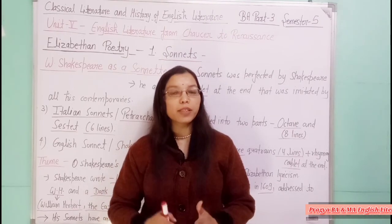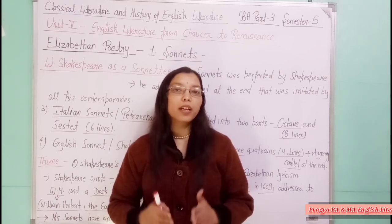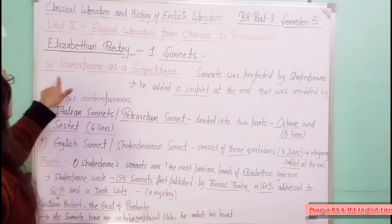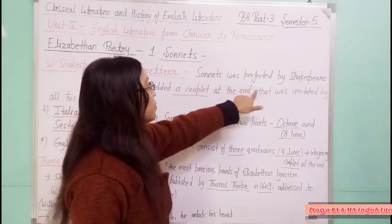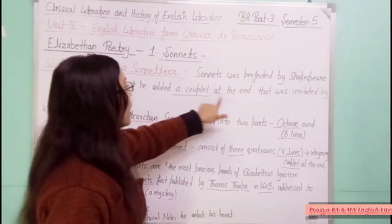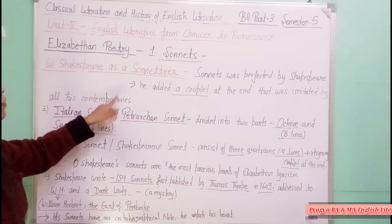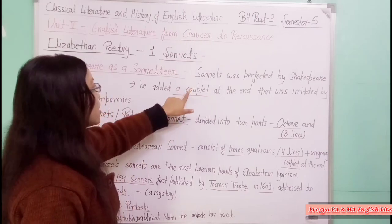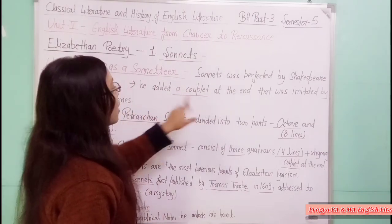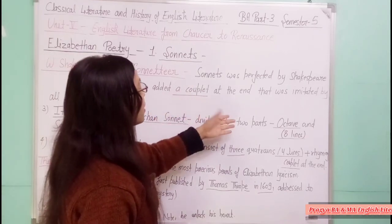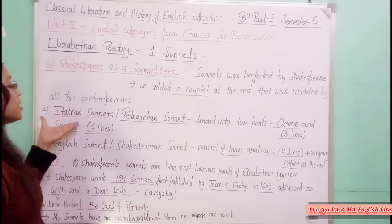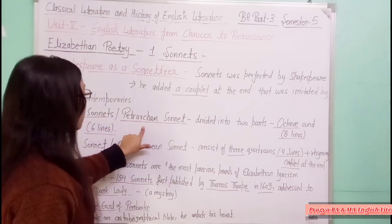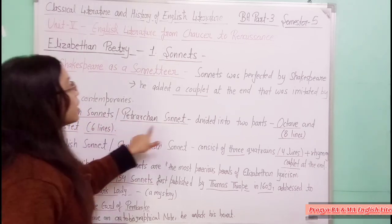After Philip Sidney and Edmund Spenser, the next great name in sonnets is William Shakespeare as a sonneteer. Sonnets were perfected by Shakespeare — he added a couplet which was then imitated by all his contemporaries. We all know William Shakespeare was a great dramatist, actor, and poet. His sonnets were very popular and celebrated. Italian sonnets, or Petrarchan sonnets, were divided into two parts: the octave of eight lines and the sestet of six lines — totaling fourteen lines.